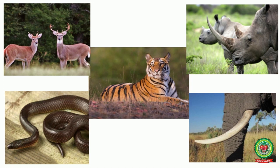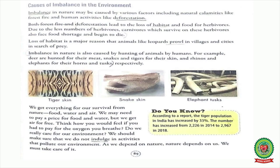Rhinos and elephants are hunted for their horns and tusks. We get food, water, and air from nature. We need to pay for food and water, but air or oxygen we breathe is free. So it's our duty and responsibility to save our environment, care for it, and not to pollute it, because we depend on nature and nature depends on us.